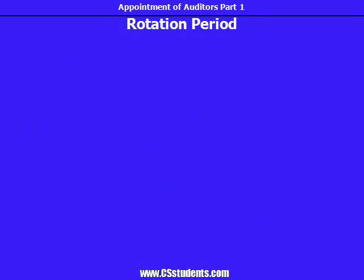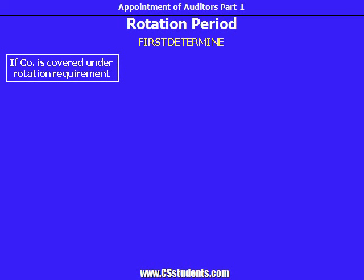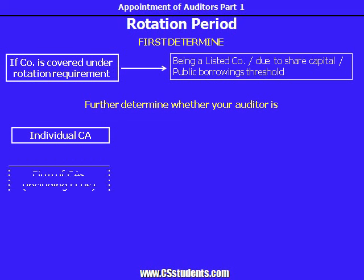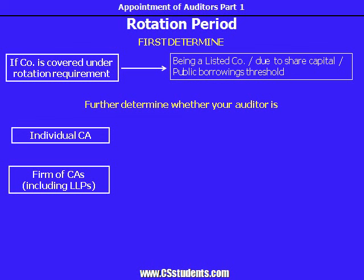Now let's find the applicable rotation period. First, determine whether your company is covered under the rotation requirement — either your company being a listed company, or a company having share capital or public borrowings exceeding the threshold limits. If your company is outside the threshold, it can continue with the same auditors for years. The requirement is not applicable till the time either it becomes listed, or it falls within the threshold due to increase in share capital or public borrowing.